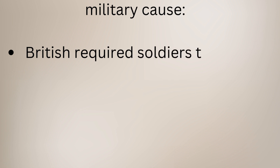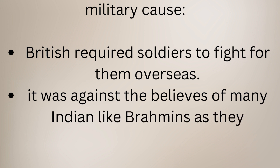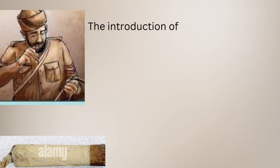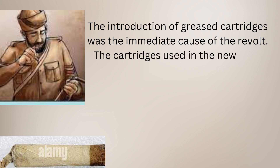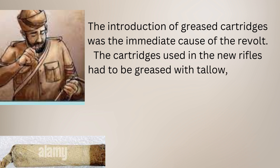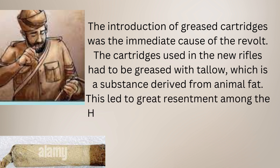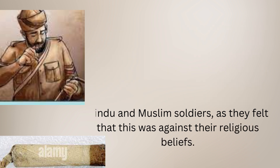Another important reason was the military cause. The British required soldiers to fight for them overseas, but many Indians like Brahmins believed that this would harm their superior caste. The immediate cause of the war was the greased cartridge incident. These cartridges were used in the new rifles and were greased with tallow, a substance derived from animal fat. This led to resentment among Hindu as well as Muslim soldiers. It was rumoured that the grease was of pig or cow — the pig being forbidden in Islam and the cow considered holy — thus both Muslim and Hindu soldiers refused to use the cartridge.